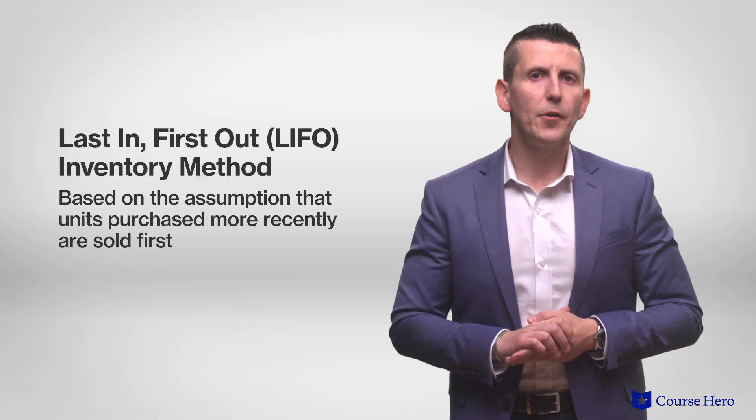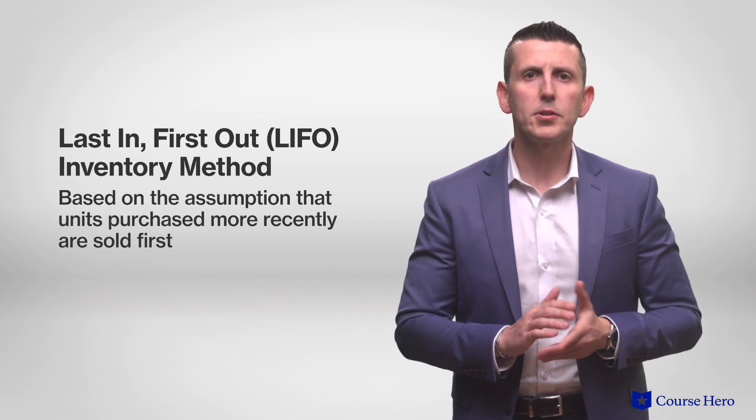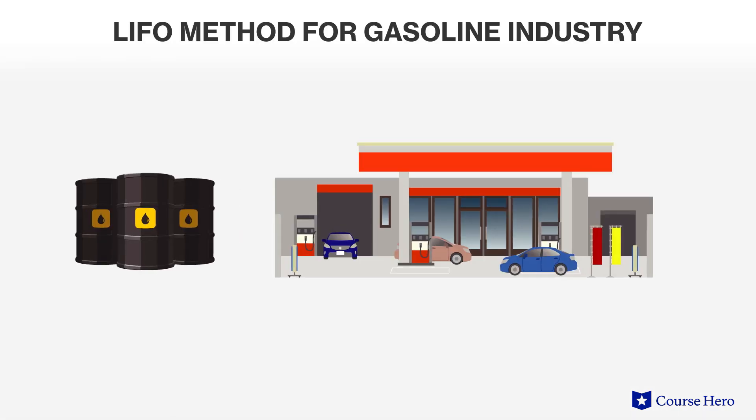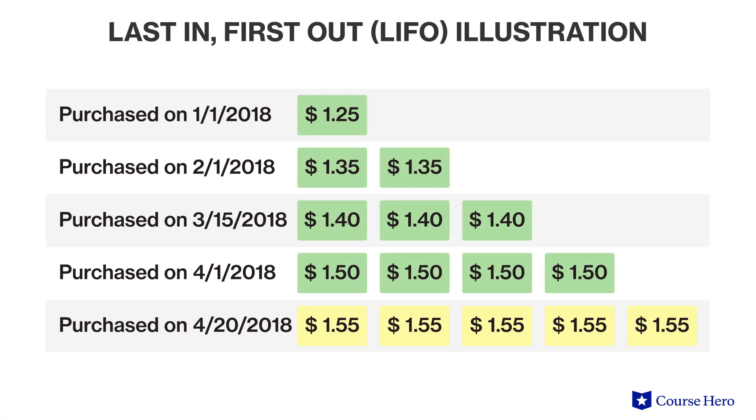The last in, first out (LIFO) inventory method is based on the assumption that the units purchased more recently are sold first, therefore leaving the units purchased first in ending inventory. The flow of cost in the LIFO method typically goes against the normal way that people think about costs. Think about the gasoline industry — with constant fluctuations in the cost of a barrel of oil, gasoline prices change to keep up with the ever-changing market. Therefore, for conservative and matching purposes, these companies elect to use the LIFO method to reflect these changes, ensuring that their income statement reflects the true profit for a given period. Remember, if a company uses LIFO, it is assuming, for accounting purposes, that newer units are sold first, which may not be the case if we actually track the units sold.